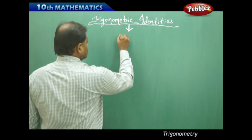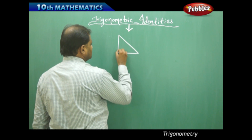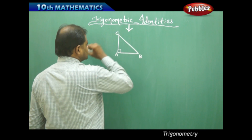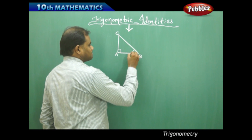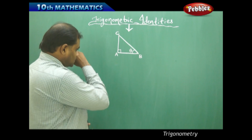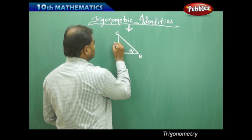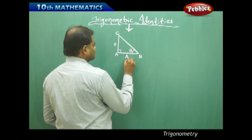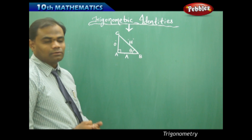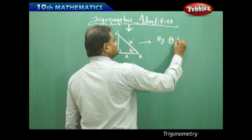Let's take a right angle triangle ABC with angle theta. In this triangle, the opposite side, the adjacent side, and the hypotenuse are identified. By the Pythagoras theorem, hypotenuse squared equals opposite squared plus adjacent squared.